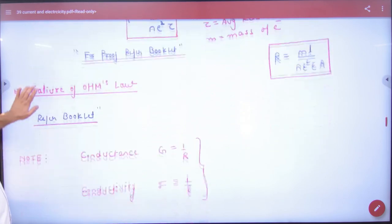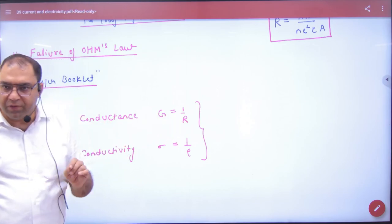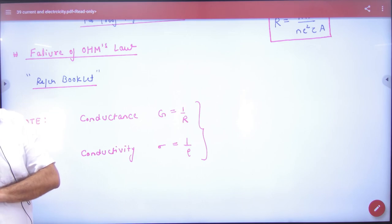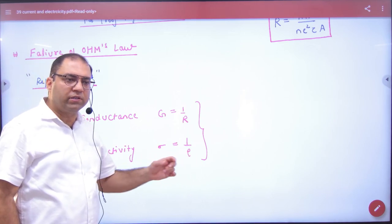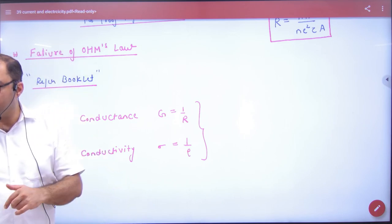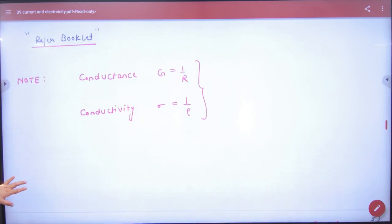Next step: failure of Ohm's law we have done. Conductance - what happens? G is 1 upon resistance formula. Conductivity sigma: 1 upon rho. Rho means resistivity, what is the reciprocal? Conductivity. We will remember. Clear here, no doubt.